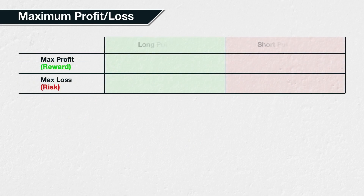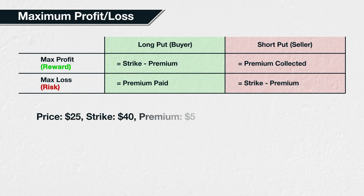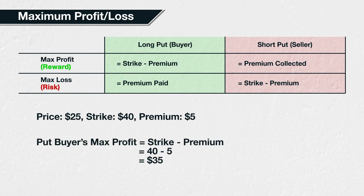As well as just being able to calculate the profit or loss for a specific value, it's also useful to know the maximum profit or loss of any option position you're thinking of opening. You can see these values in this table. For example, using the previous example with a strike of $40 and premium of $5, the maximum profit for the buyer is $35. This is calculated as strike minus premium, or $40 minus $5, which equals $35. The maximum loss for the seller is of course also $35, calculated in the same way.